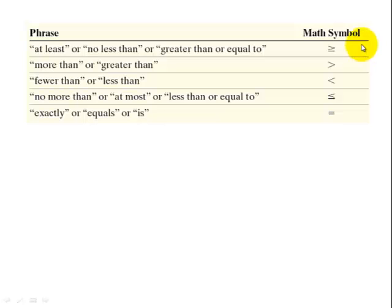Using standard normal distribution, greater than or equal to is the same thing as greater than. Less than or equal to is the same thing as less than. Important phrases that we need to remember would be at least, which means greater than, and also at most, which means less than.